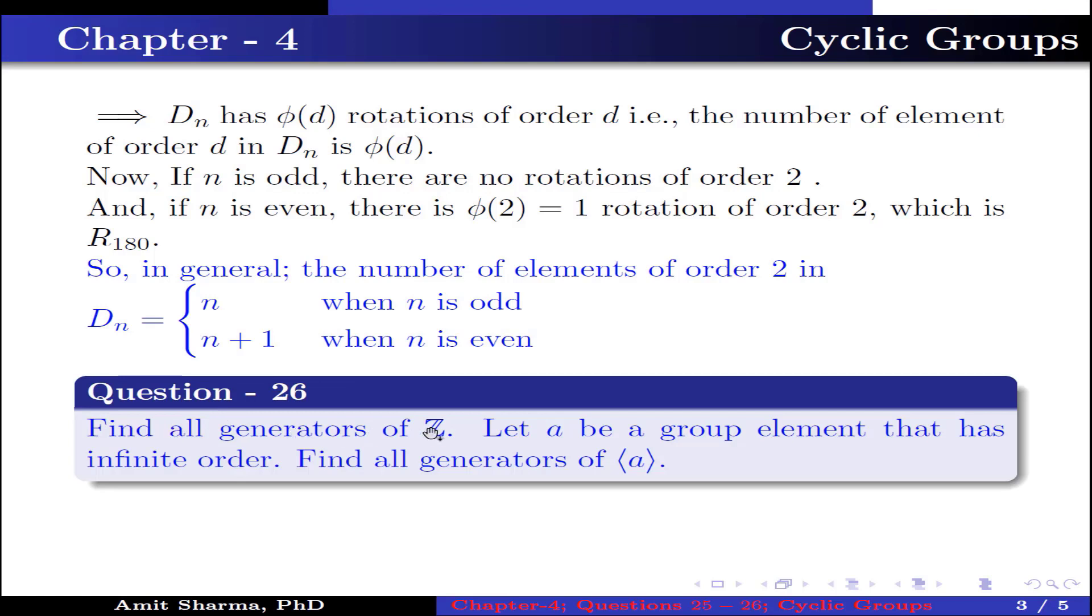Question number 26: Find all the generators of Z. Let a be a group element that has infinite order. Find all the generators of the group generated by a.